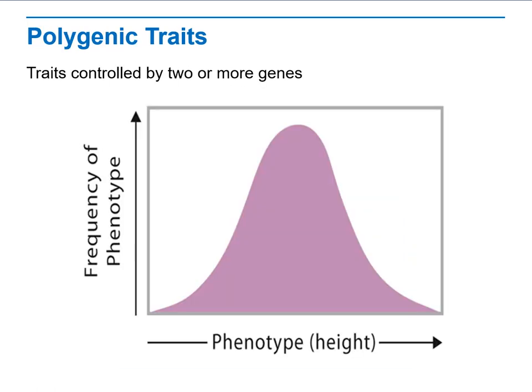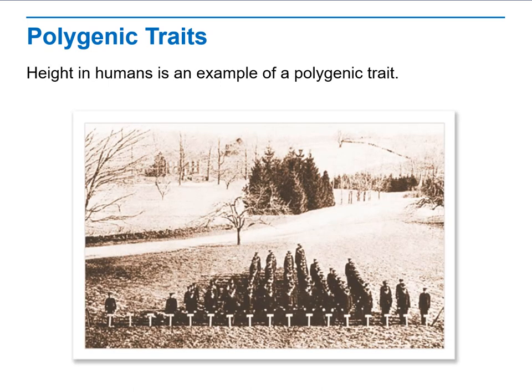Polygenic traits occur when more than two genes control the phenotype. For example, height in humans is an example of a polygenic trait because you need more than one gene to produce this trait.